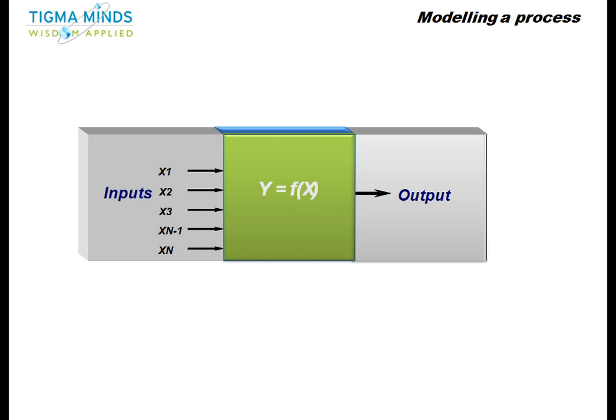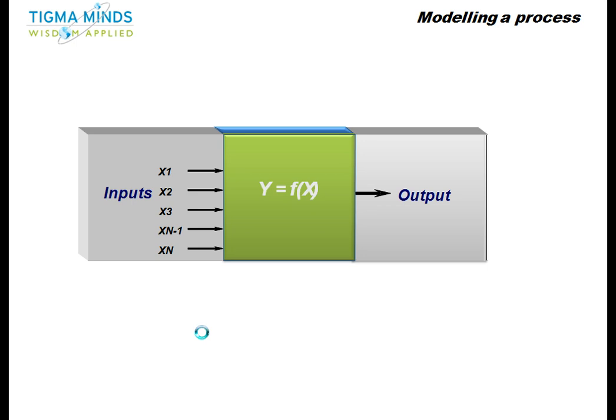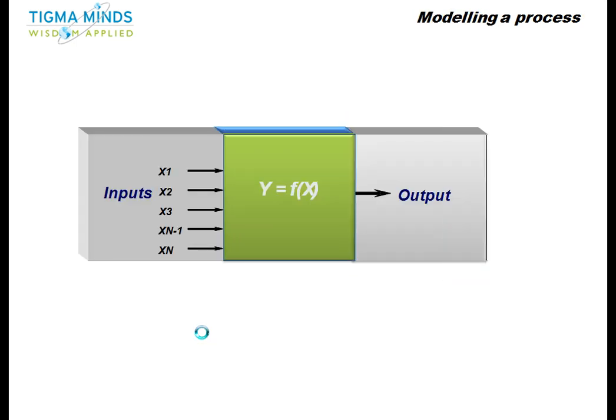X's are the elements or the categories that we saw here. So this is kind of a more logical way of looking at a process. So this is where your process is. This box here is what transforms inputs into an output.